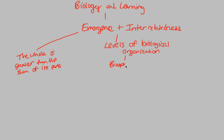We start with the biosphere — this is everything, essentially Earth. Everything on Earth is the biosphere. Because biology is the study of life, the area in which biology happens is known as the biosphere. Within the biosphere, we have ecosystems. An ecosystem is a combination of living and non-living things all together within a certain area.